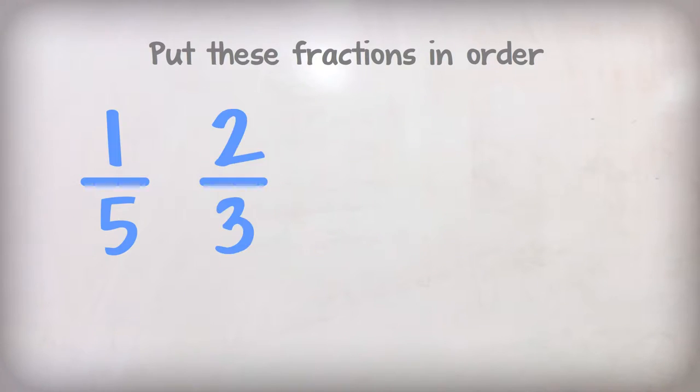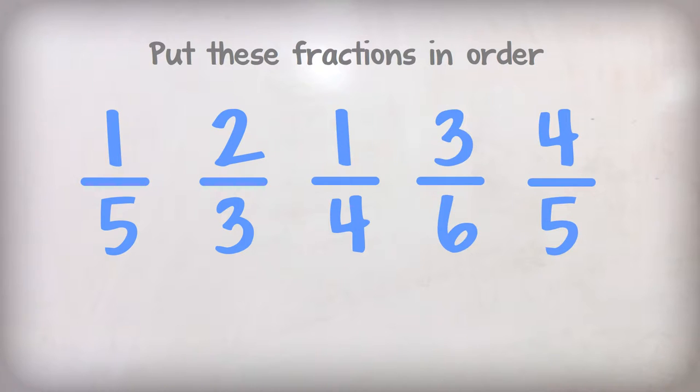Let's look at a few fractions and build a graph, so we can put them in order from greatest to least. One-fifth, two-thirds, one-fourth, three-sixths, and four-fifths.